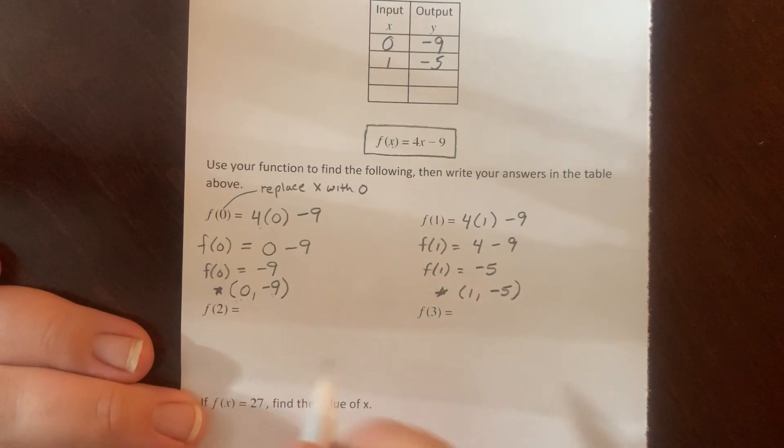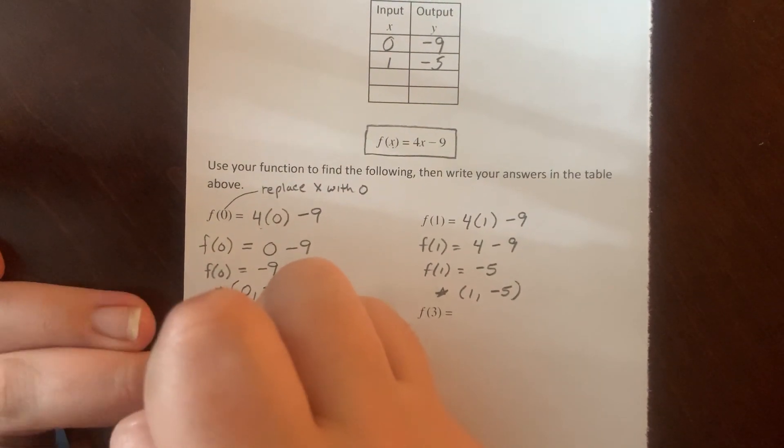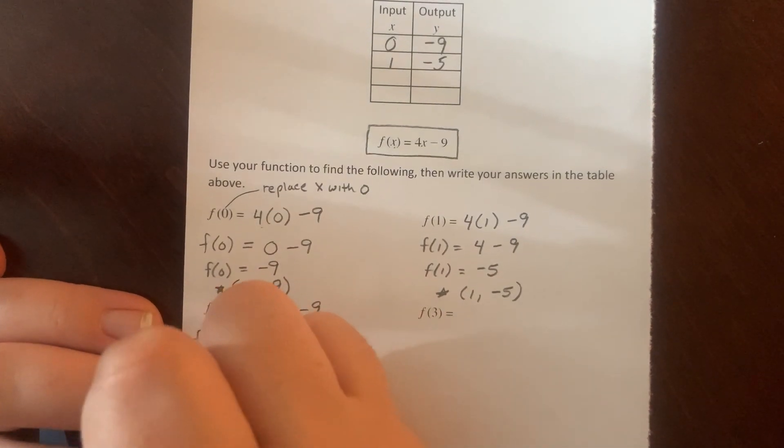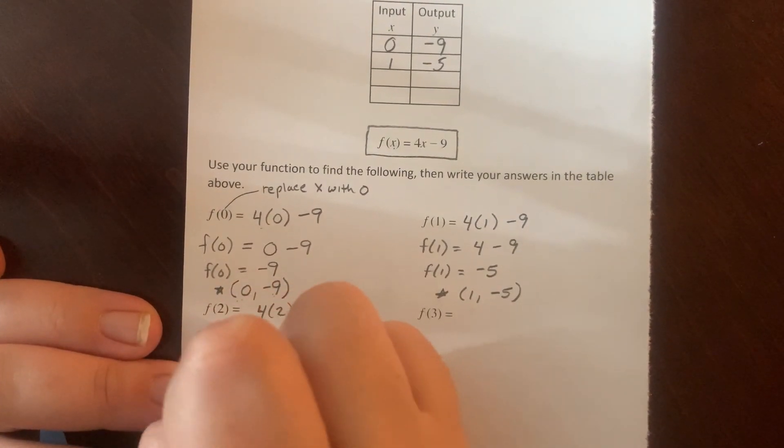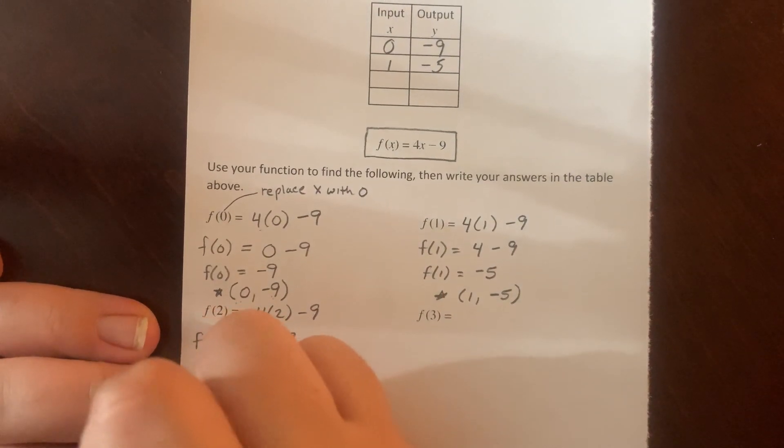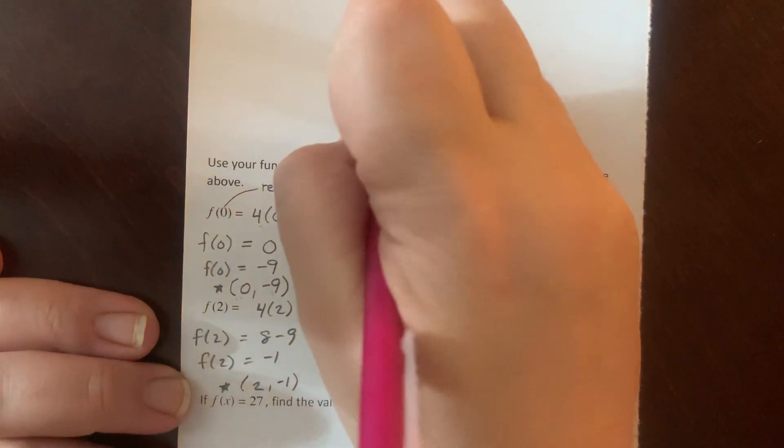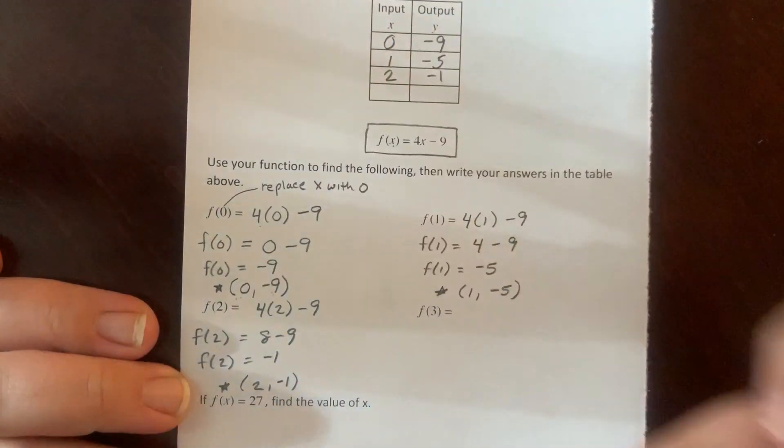I'm going to go a little quicker on this next one. 4 parentheses 2 minus 9. F of 2 equals 8 minus 9. F of 2 equals negative 1. So my ordered pair is 2 comma negative 1. When X is 2, Y is negative 1.